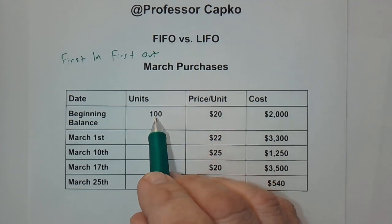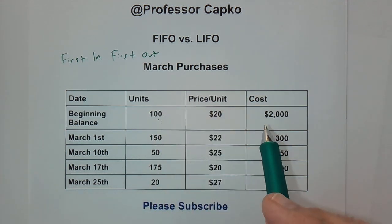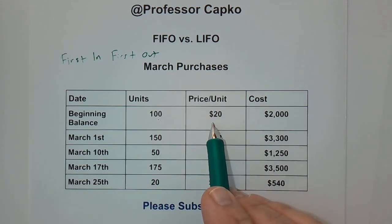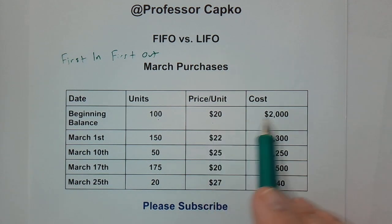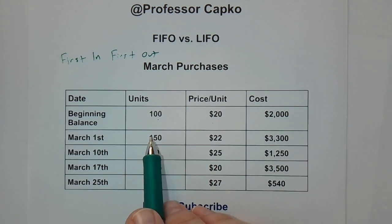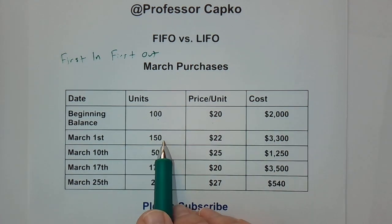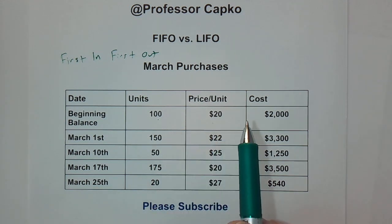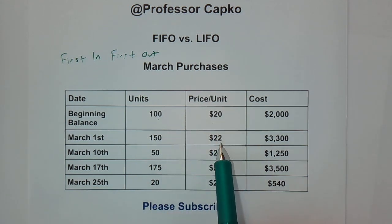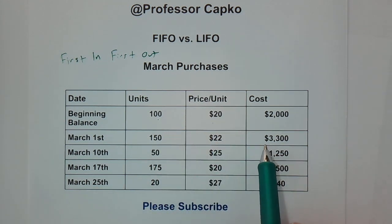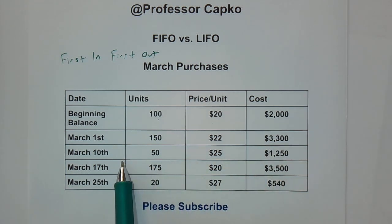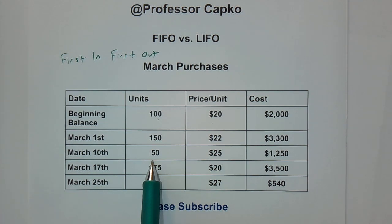The inventory in this example had a beginning balance of a hundred units at $20 per unit, so that's $2,000 worth of inventory. On March 1st we purchased an additional 150 units at $22 per unit, adding $3,300 to our inventory. On March 10th we only bought 50 units because the price had risen.